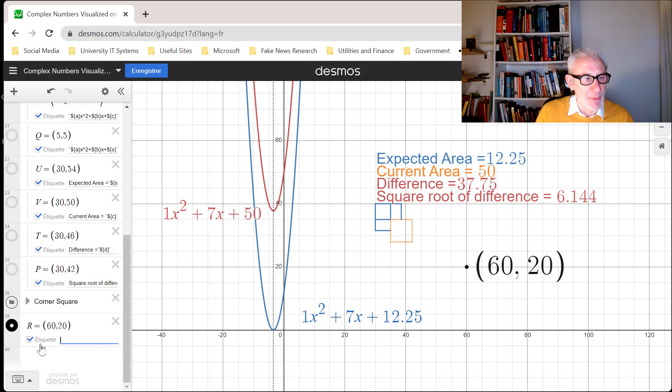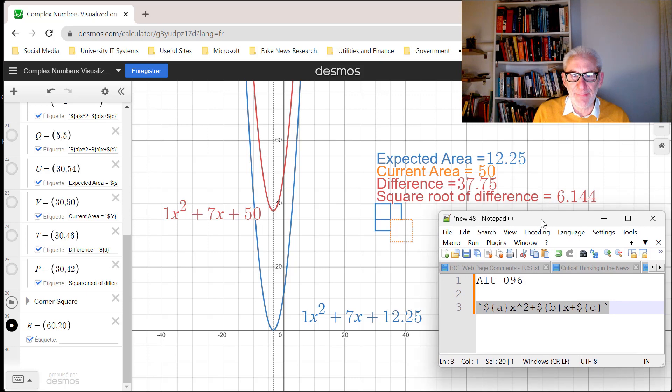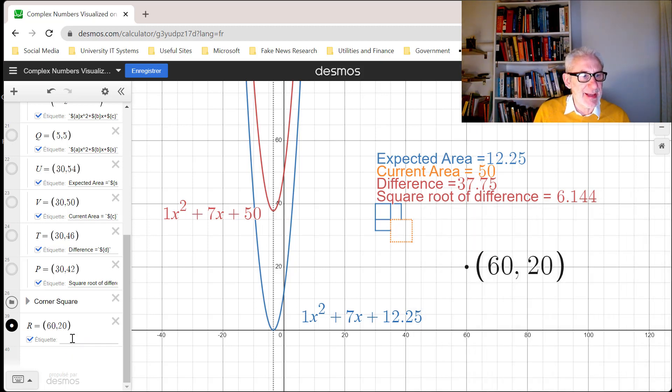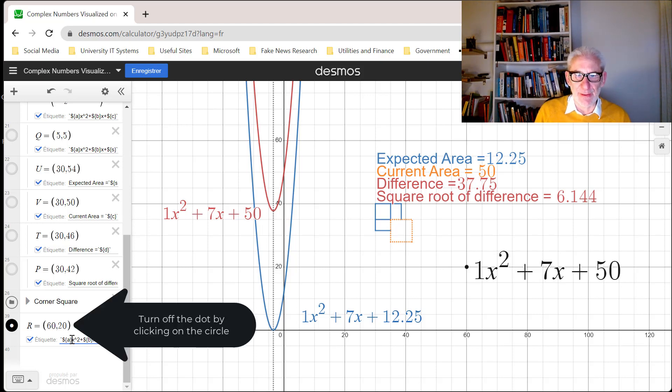Now I'm going to override the standard label. By clicking in this space here with the label on, I can override that with a piece of what's called LaTeX. I'm just going to copy it from a file I got here. I've got notepad with an appropriate formula in it. I'm going to select that and place that in there. It'll overwrite the default etiquette and there you can see I've got 1x² + 7x + 50.